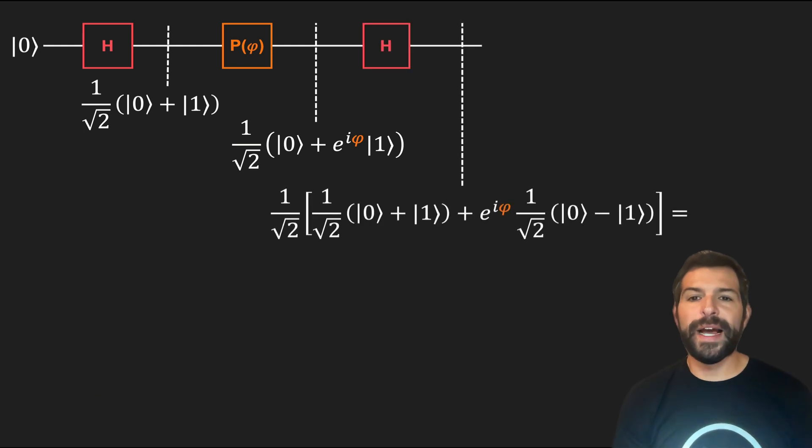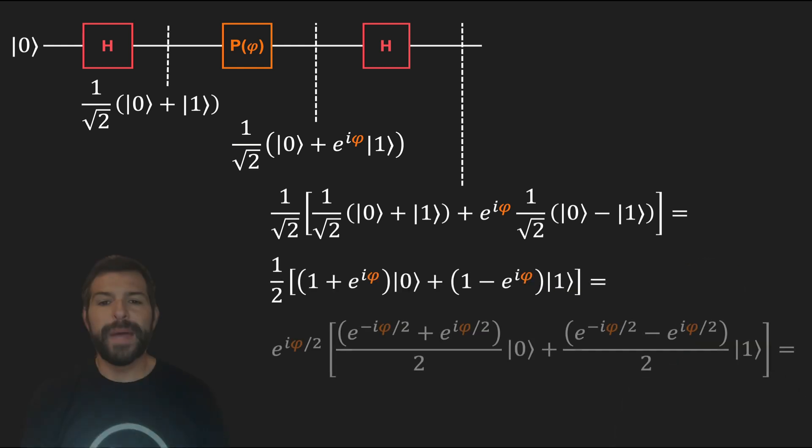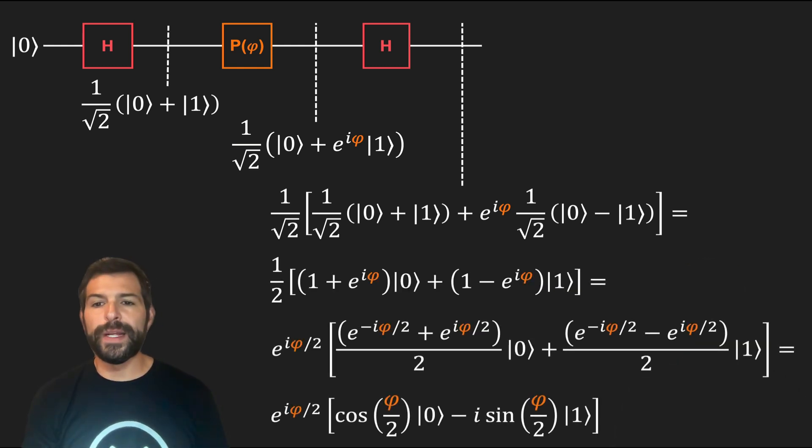Lastly, we apply another Hadamard gate to our qubit, which recombines the incoming waves, just like the first Hadamard gate split our waves into a superposition of top and bottom. And if we work through the math, we can see that what we get is a cosine and a sine term as a function of the angle phi, which basically corresponds to the interference terms that we are looking for.